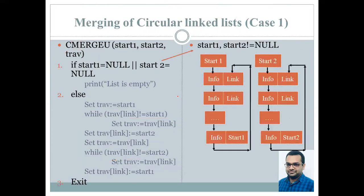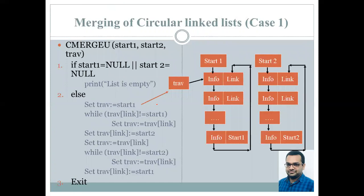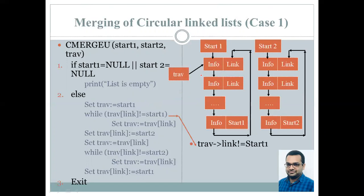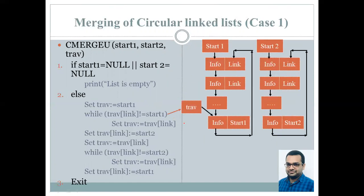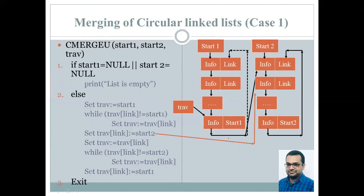Let us understand further through an example. We are given these two circular linked lists — none of them is null or empty. So start1 and start2 are both not null, and therefore the empty-list statement will not be printed. The control jumps to the else part. We initialize traversal with the address of the first node from the first circular linked list. We check if traversal's link is equal to start1, which is not the case, so we increment traversal and keep going until we reach the last node of the first circular linked list. We then assign traversal's link the address of start2, so the last node of the first list now points to the first node of the second circular linked list.